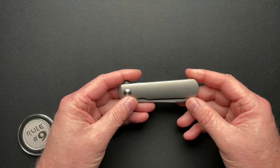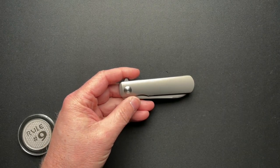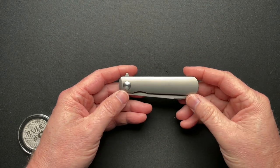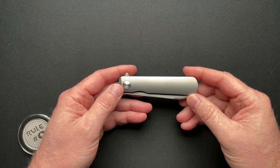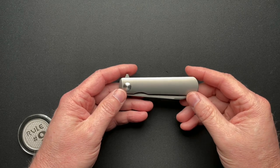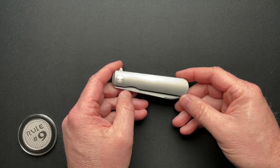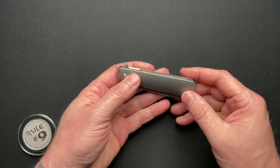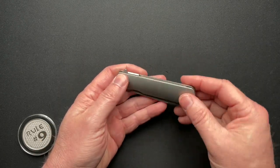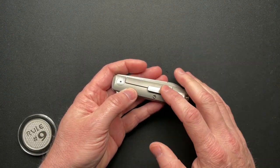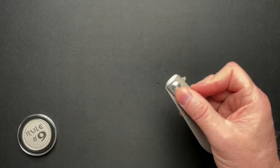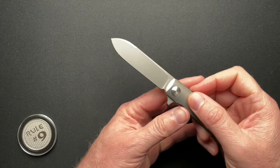This is the Terrain 365 Otter Flip AT. AT is for all terrain because this is impervious to rust, the entire thing. It's got titanium scales, titanium clip, titanium hardware, and a terravantium blade.